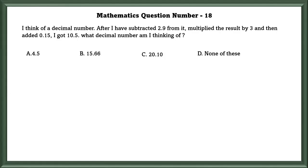Mathematics question number 18: I think of a decimal number and I have subtracted 2.9 from it, multiplied the result by 3, and then added 0.15. I got 10.5. What decimal number am I thinking of?